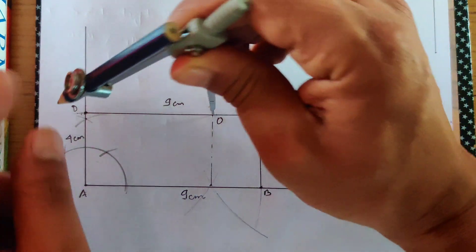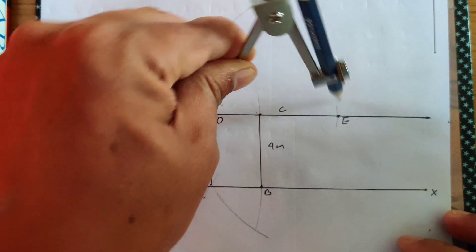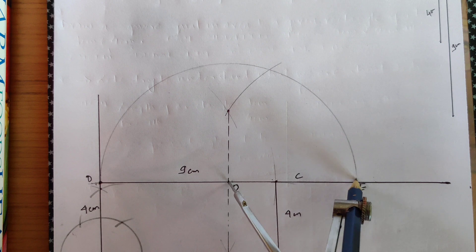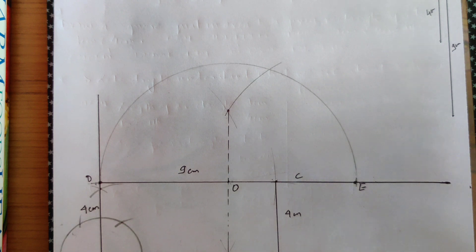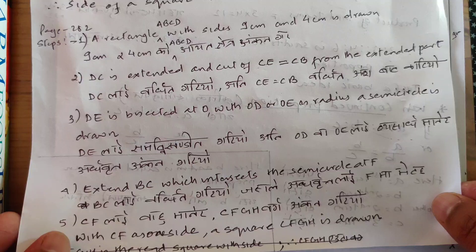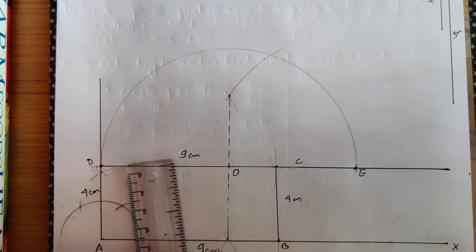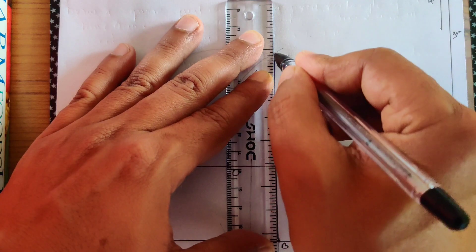The semicircle is drawn. Step four: extend BC which intersects the semicircle at F. Let's extend BC — this is my BC — extend it upward to intersect the semicircle. This intersection point is F. Always make a clear point and label it.